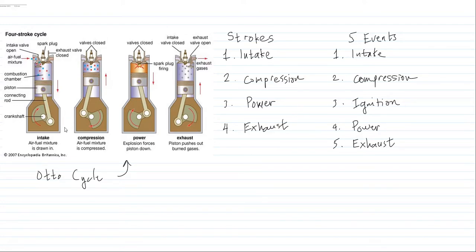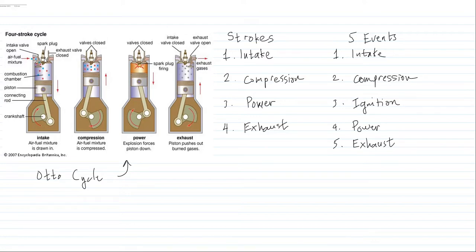First, let us familiarize ourselves with the parts. We have the piston, which moves up and down. We have the connecting rod and the crankshaft — those are the parts of a reciprocating engine. We also have the intake valve, the exhaust valve, and the spark plug.